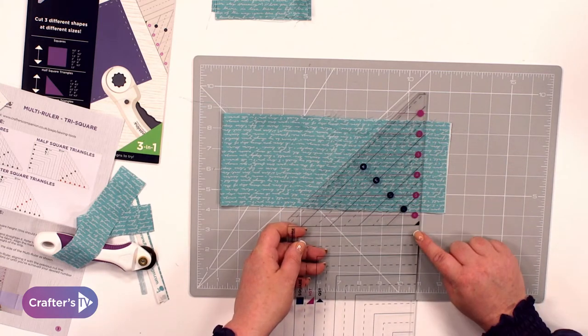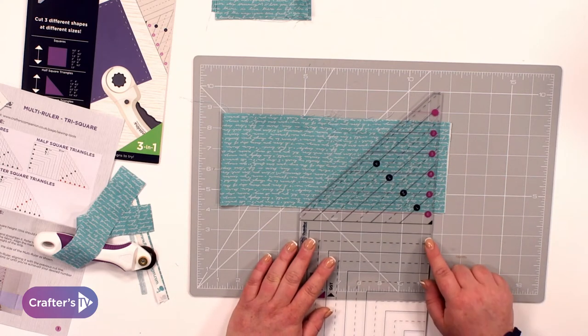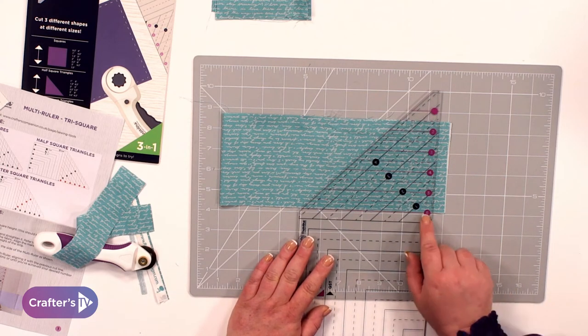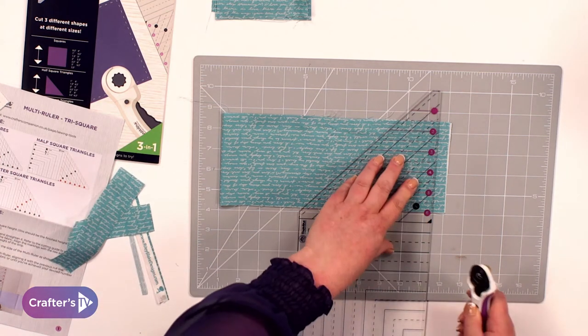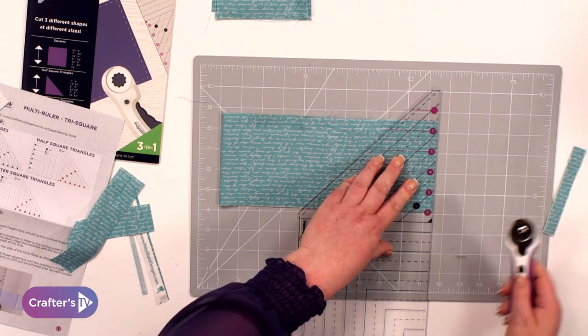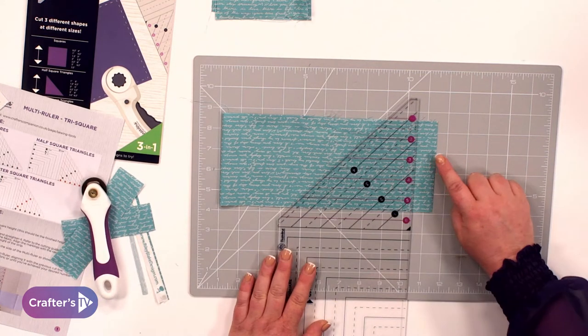And I'm looking now at the pink markings. So you can see the pink markings on here. Now the first thing I need to do is do a straight edge. So I'm just lining up any line. It doesn't matter which line and I'm just cutting up that side so we've got that straight edge to start with.